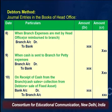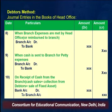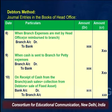On receipt of cash from the branch — on account of cash sales, collection from debtors, or sale of fixed assets — the entry is: Bank Account debit to Branch Account. Whatever amount is collected by the branch is remitted to the head office; since the head office balance is increasing, Bank Account is debited and Branch Account is credited.